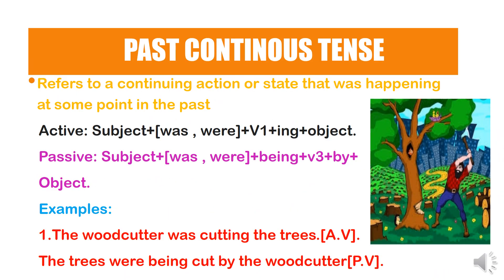Past continuous tense refers to a continued action or state that was happening at some point in the past. In active voice: subject plus was/were plus V1+ing plus object. In passive voice: subject plus was/were plus 'being' plus V3 plus 'by' plus object. Example: 'The woodcutter was cutting trees' becomes 'Trees were being cut by the woodcutter.' 'Being' plays a very important role in passive voice.